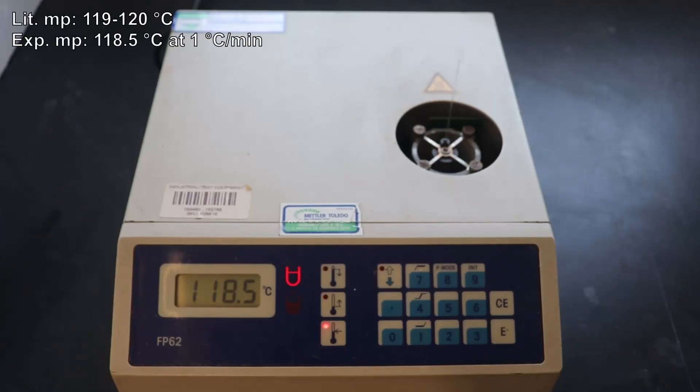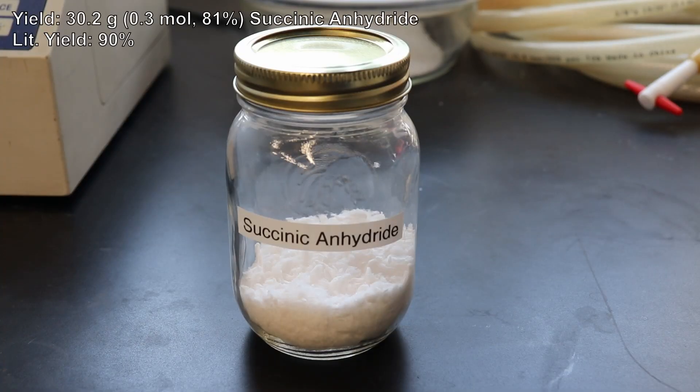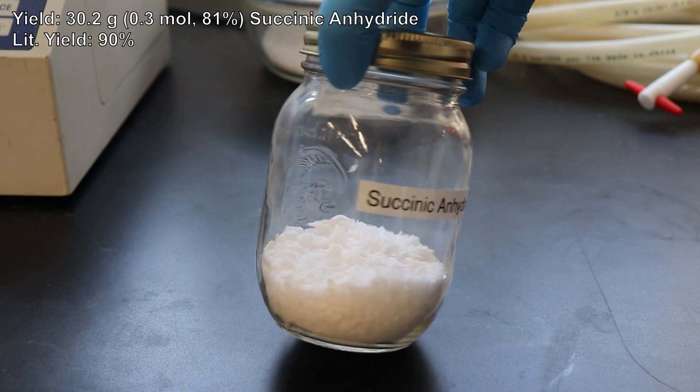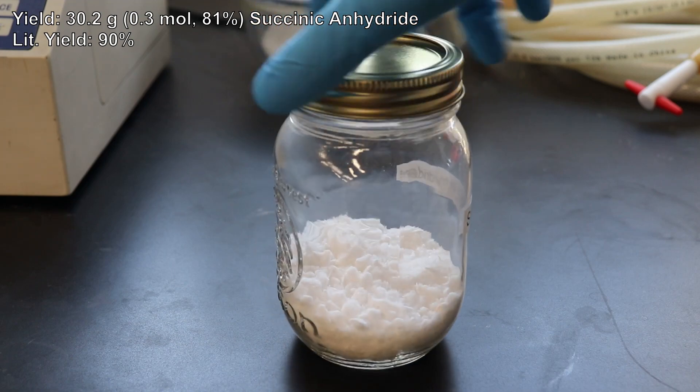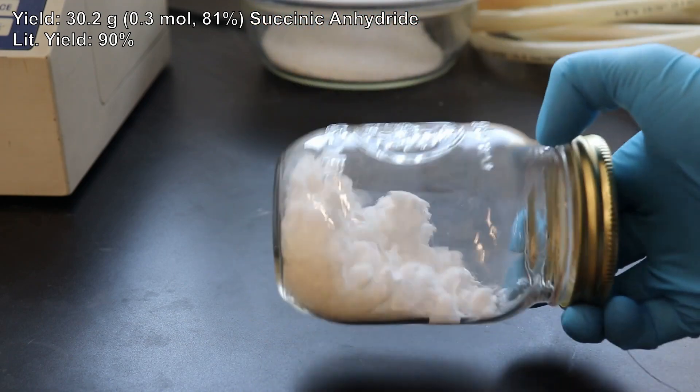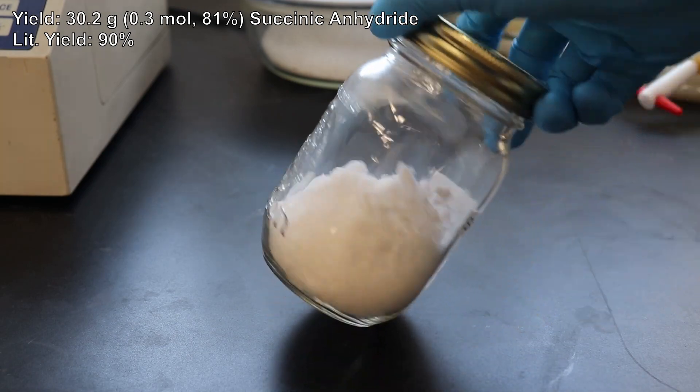The literature melting point of succinic anhydride is 119 to 120 degrees Celsius. I ended up with a melting point of 118.5 degrees Celsius which when rounded is perfect. I ended up with 30.2 grams of succinic anhydride which corresponds to an 81% yield, and compared to the literature yield of 90% this is pretty good.